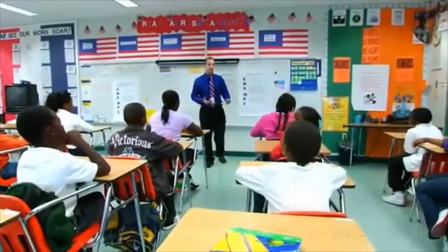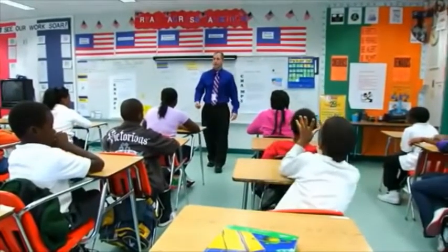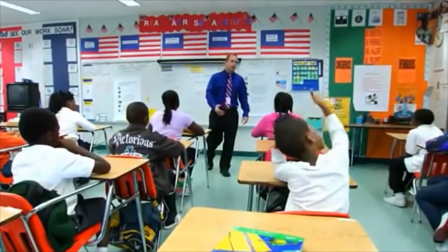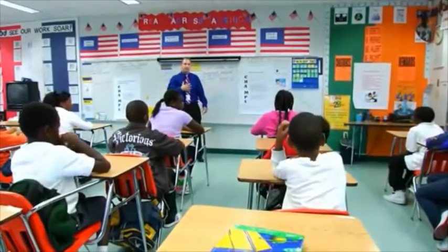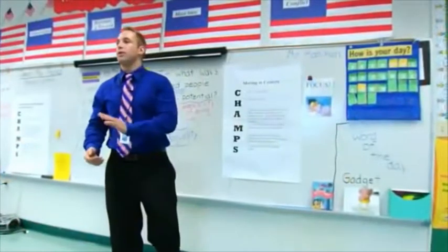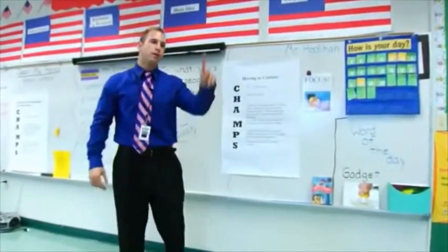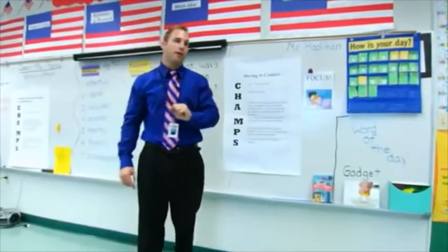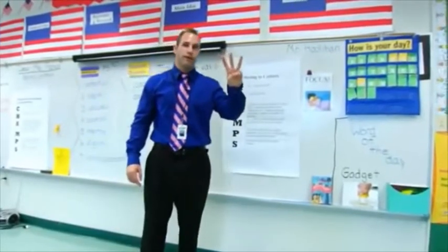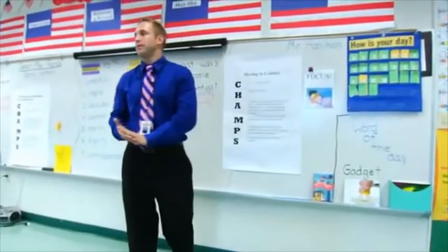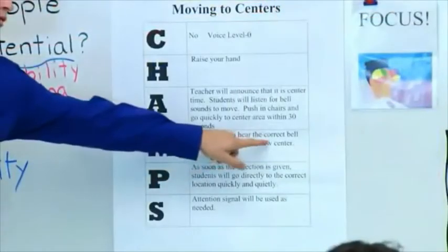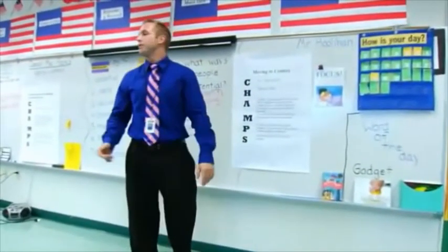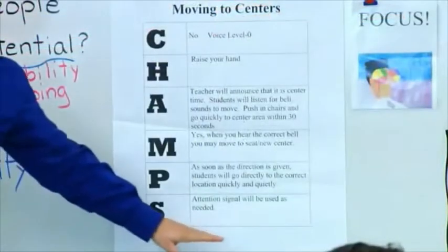This time they will be moving from center to center. Your conversation level when we are at centers and moving from center to center is at a zero — that means I should not hear a sound. If you need help while you're moving from center to center, I expect you to raise your hand. Your activity is that you will listen for bell sounds to tell you what to do. If you hear one bell sound, I would like your undivided attention on me. When you hear two bell sounds, you will clean up your activity and move to the next center. When you hear three bell sounds, I would like you to clean up your activity and return to your seats. In this instance, the attention signal is the bell.